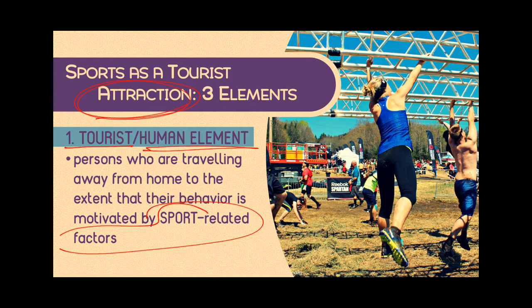For example, if you ask tourists at a Spartan race, marathon, or dragon boating and canoeing venue why they came — and they say 'I came because of the dragon boat' or 'I came because of the marathon' — then the tourist's motivation and image of that destination is sports-related. That ticks the first element: the tourist's motivation to go to that attraction is sports-related.